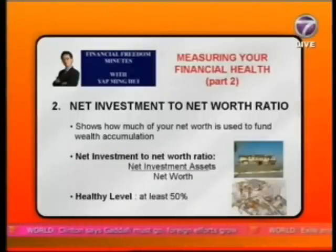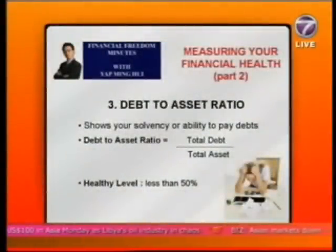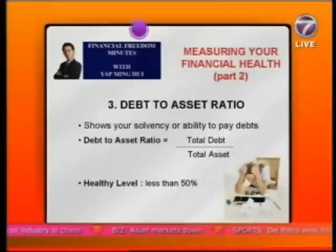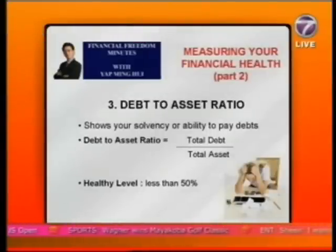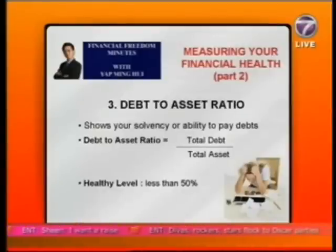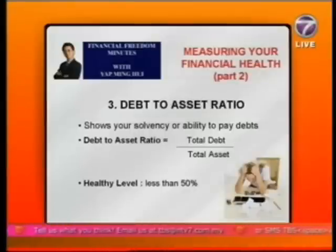The third ratio to measure your financial health is what I call the Debt to Asset Ratio. This ratio shows your solvency — your ability to pay debts. To get this ratio, you divide your total debt by your total assets. For example, someone with 200,000 in debt and 1 million in assets gets a 20% Debt to Asset Ratio. The healthy level for this ratio should always be less than 50%.